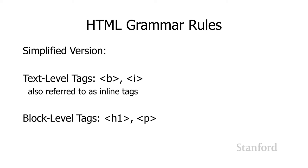Then there are the block level tags. As the name suggests, these are used to create blocks of text — like h1 through h6 headers, the paragraph tag, table tags, and tags that create lists of items. There are also structural tags — like the HTML tag, the head tag, and the body tag — but we're not going to worry about those for this discussion.